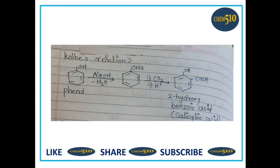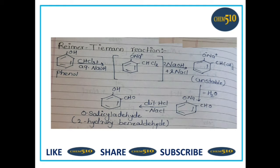Then Kolbe's reaction. When sodium phenoxide is treated with carbon dioxide under pressure of 4 to 7 atmospheres and at 400 Kelvin temperature, sodium salicylate is formed, which on further reaction gives salicylic acid. Phenol on reaction with sodium hydroxide gives sodium phenoxide, which on reaction with CO₂ under pressure and temperature forms 2-hydroxybenzoic acid (salicylic acid). This is known as Kolbe's reaction.